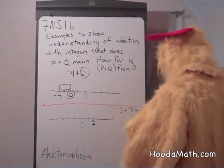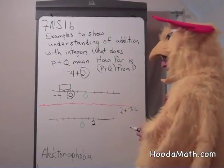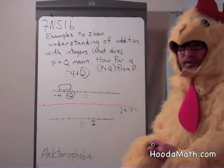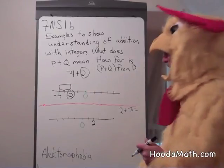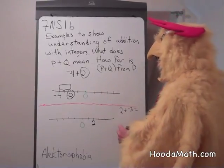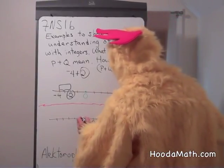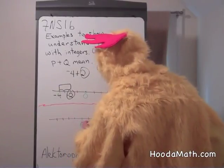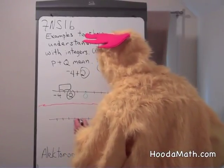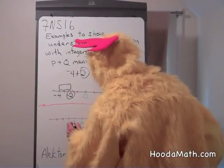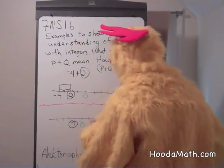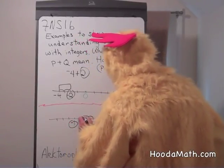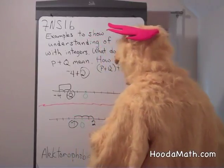If we add negative 3, what direction should we move? You're correct. 3 units to the left. 1, 2, 3. So the sum of 2 plus negative 3 is right here, which is negative 1. We moved 1, 2, 3 units to the left.